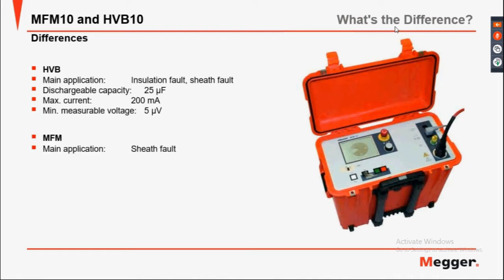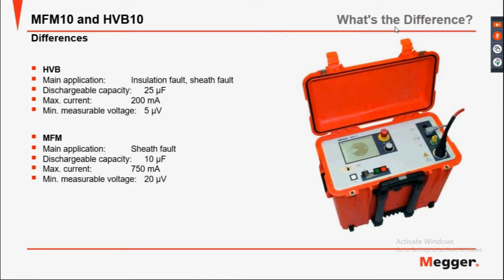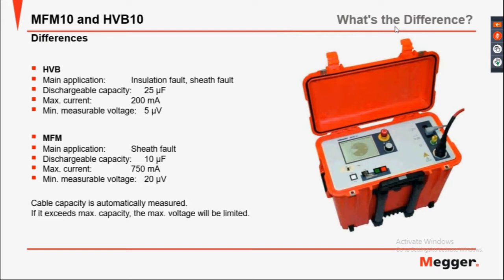The MFM10's main application is the sheath fault. The dischargeable capacity is 10 µF. The maximum current is 750 mA. The measurable voltage is 20 µV. The cable capacity is automatically measured; if it exceeds the maximum capacity of the discharge, the maximum voltage will be limited.